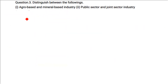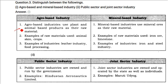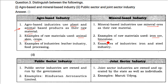Distinguish between agro-based industry and mineral-based industry. Agro-based industries use plant and animal-based products, that is agricultural products, as their raw materials. Mineral-based industries use mineral ores as their raw material. Examples of raw materials for agro-based industry include animal skin and crops, while mineral-based industry uses iron ore and limestone.